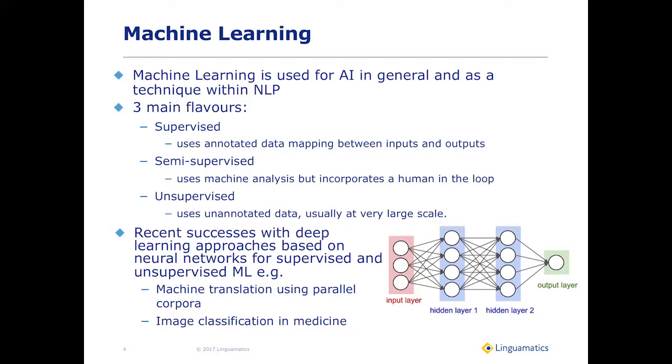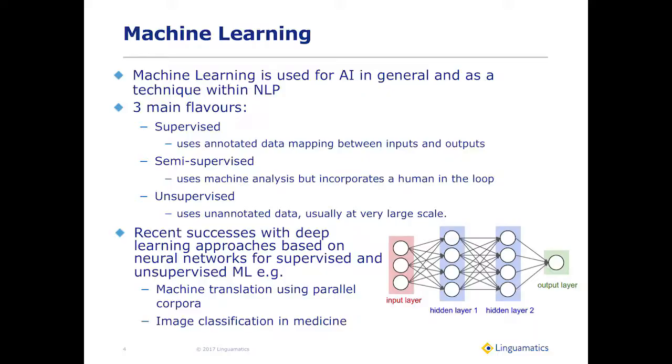Examples include machine translation using parallel corpora. Deep learning has been able to generalize better than other techniques, meaning you can sometimes use a smaller dataset than you would have previously. There have also been great strides in image classification in medicine.